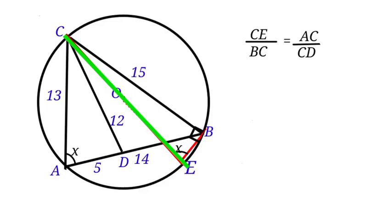CE is unknown, BC is 15, AC is 13 and CD is 12. Let us find CE. We cross multiply. When we cross multiply, we have CE equals 16.25. 16.25 is the diameter of the circle and radius is half the diameter.